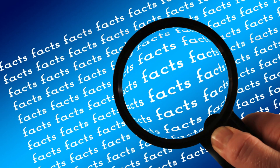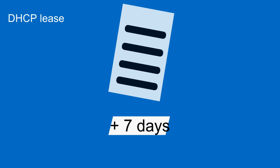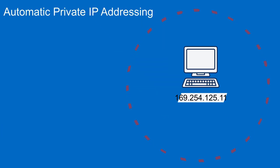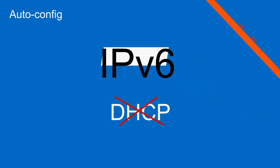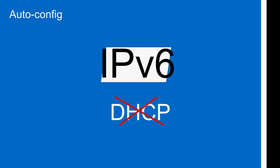Here are some additional facts. The network configuration parameters which a device receives from a DHCP service are leased and must be renewed when the allotted time has expired. In the absence of a DHCP service, modern computers can assign themselves network parameters, which will allow communications within the local network, but not beyond. With the new version of the internet protocol, IPv6, which allows devices to auto-configure, there may not be a need for DHCP services in the near future.